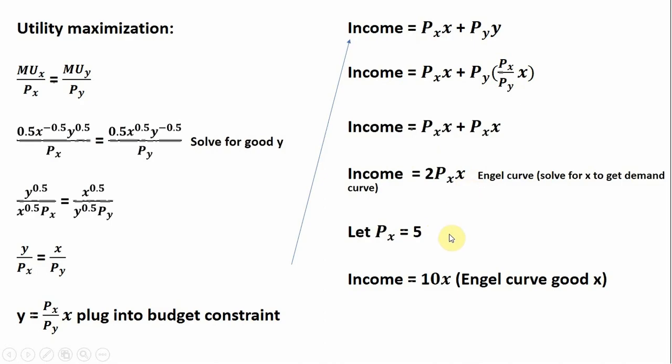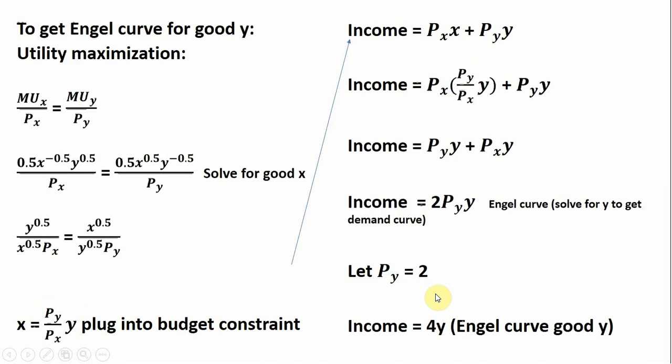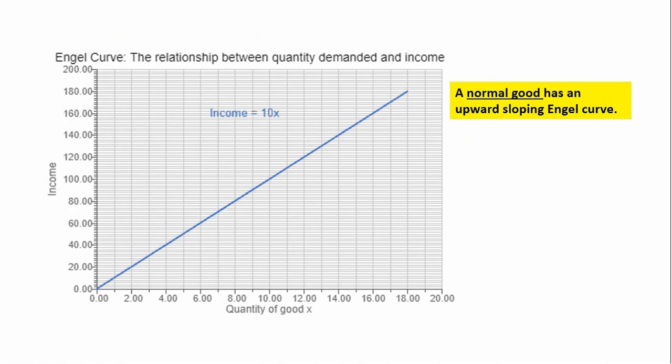The Engel curve, as we defined, shows the relationship between income and quantity demanded, holding prices fixed. If we plug in 5 for the price of good X, we have our Engel curve for good X, which we can graph. It has a slope of 10, which is positive, indicating we're dealing with a normal good—something consumers buy more of as their income increases.